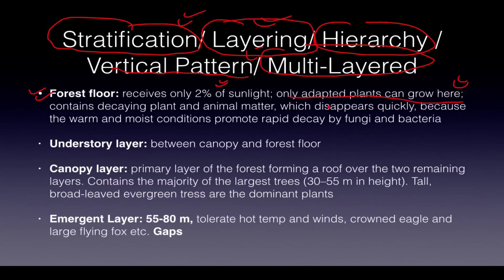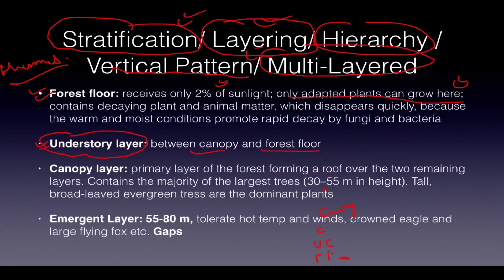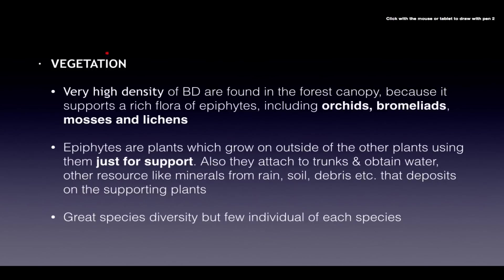Proliferation of fungi and bacteria acts on organic matter and converts it to humus. The layers are: forest floor, understory, canopy, and emergent layer. The canopy is the primary layer — it has maximum diversity and visibility, and is 20–55 meters in height with tall broad-leaved evergreen plants. The emergent layer contains exceptional trees 50–80 meters tall that must tolerate hot temperatures and strong winds. Species like the crowned eagle and large flying fox live only in the emergent layer.